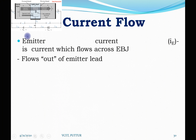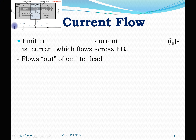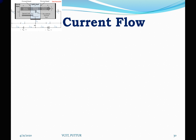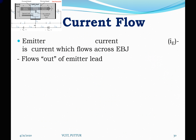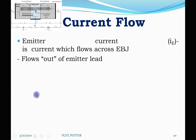The emitter current IE flows out of the emitter lead in the direction of positive charge flow — that is, hole current — opposite to the direction of negative charge flow — that is, electron current. Thus, the emitter current IE equals these two components: hole current in the direction of positive charge flow, and electron current opposite to the direction of negative charge flow.